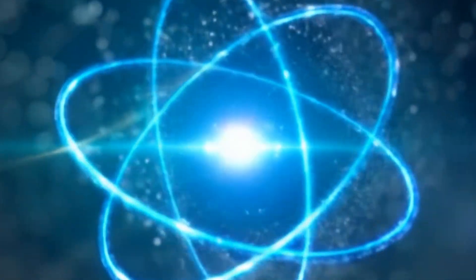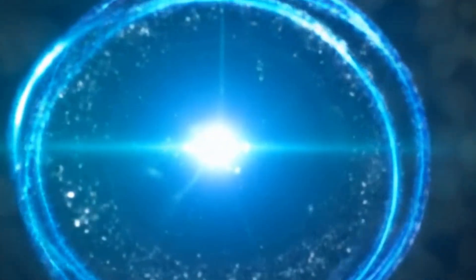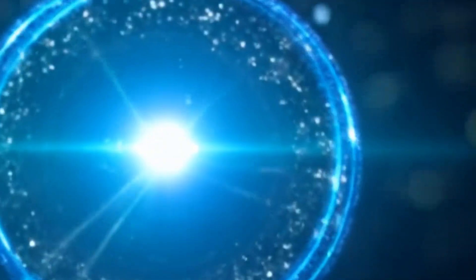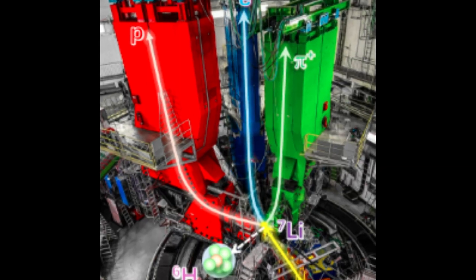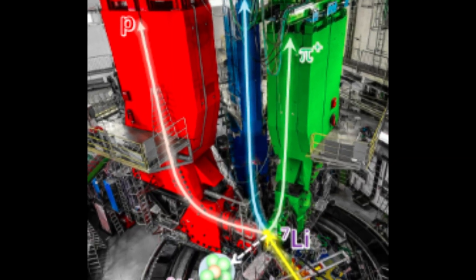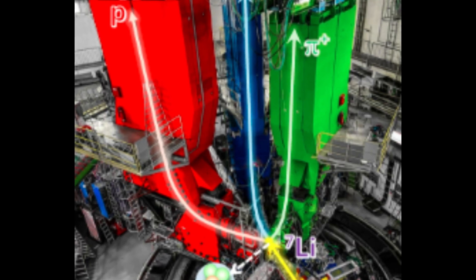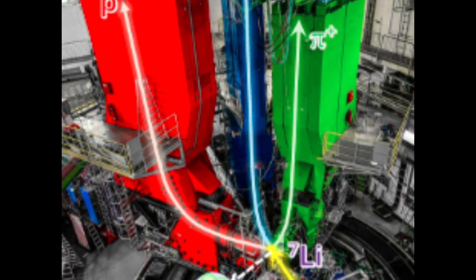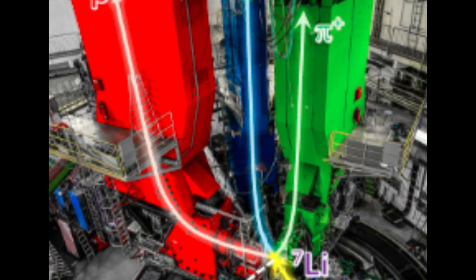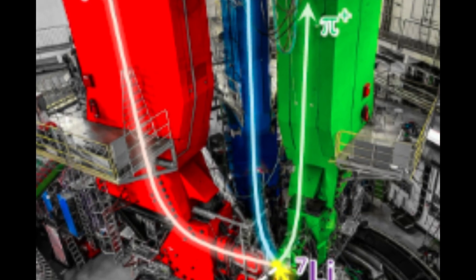Even more impressive? The researchers pulled this off by running all three of Mainz Microtron's spectrometers at once in a rare coincidence mode that let them detect all the particles involved in a single event. It's like watching a car crash in slow motion from three different camera angles and learning something new about how cars break apart.